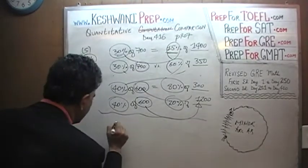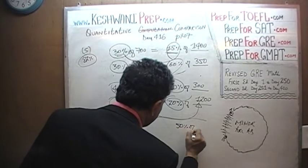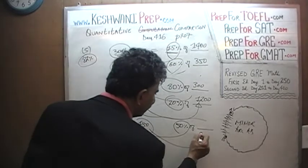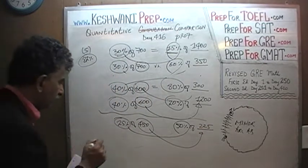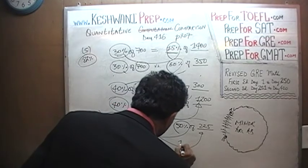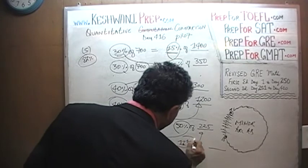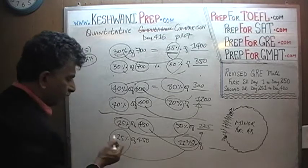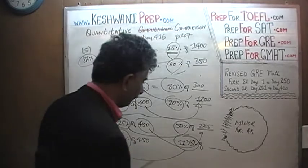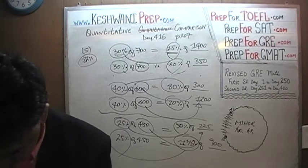Two more: 25% of 450 versus 50% of [what]? Twice the percentage, so half the amount — 225. And 25% of 450 versus 12.5% of [what]? 12.5% is half of 25%, so we need twice the amount — 900. They're all equal. That was question number 5. I'll see you tomorrow — bye!